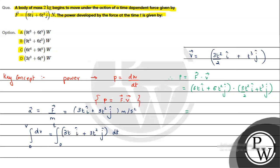So when we multiply from î cap, it will be 18/2, that is 9t³, plus 6t raised to 5. So this value is the power.